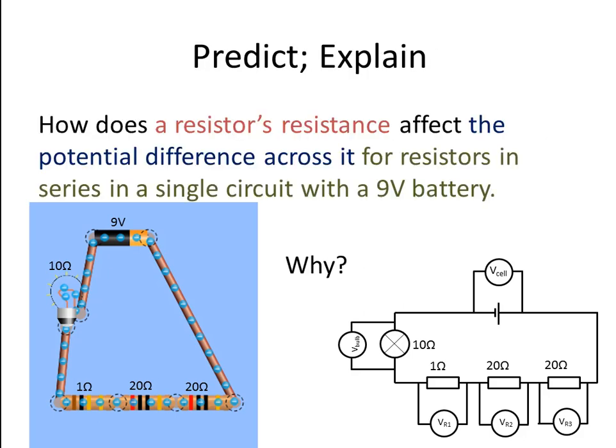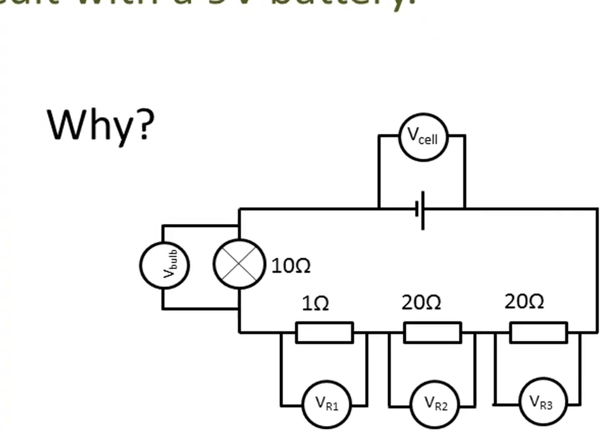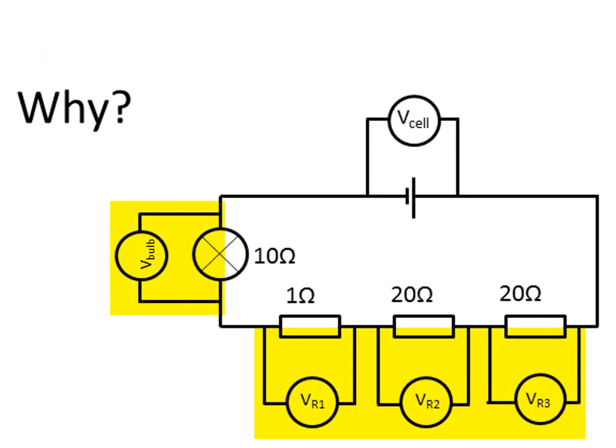What do you think we are going to find? If we build the circuit and measure the potential difference across each element, are we going to find the same reading across all of them? If not, which resistors are going to have a higher voltage across them, which resistors a lower voltage, and why?